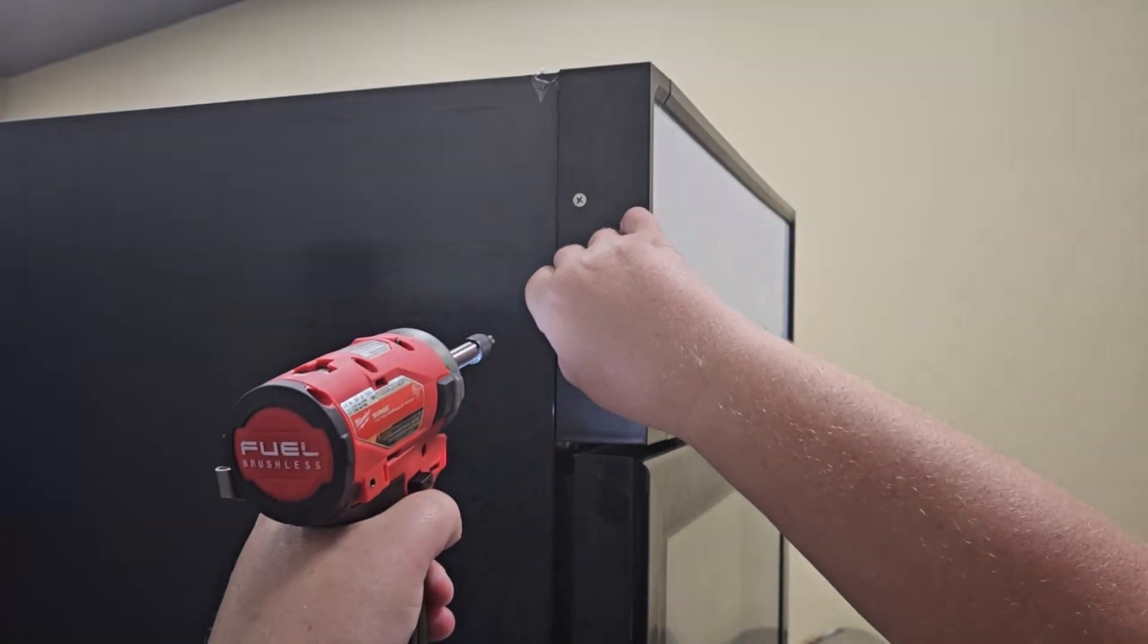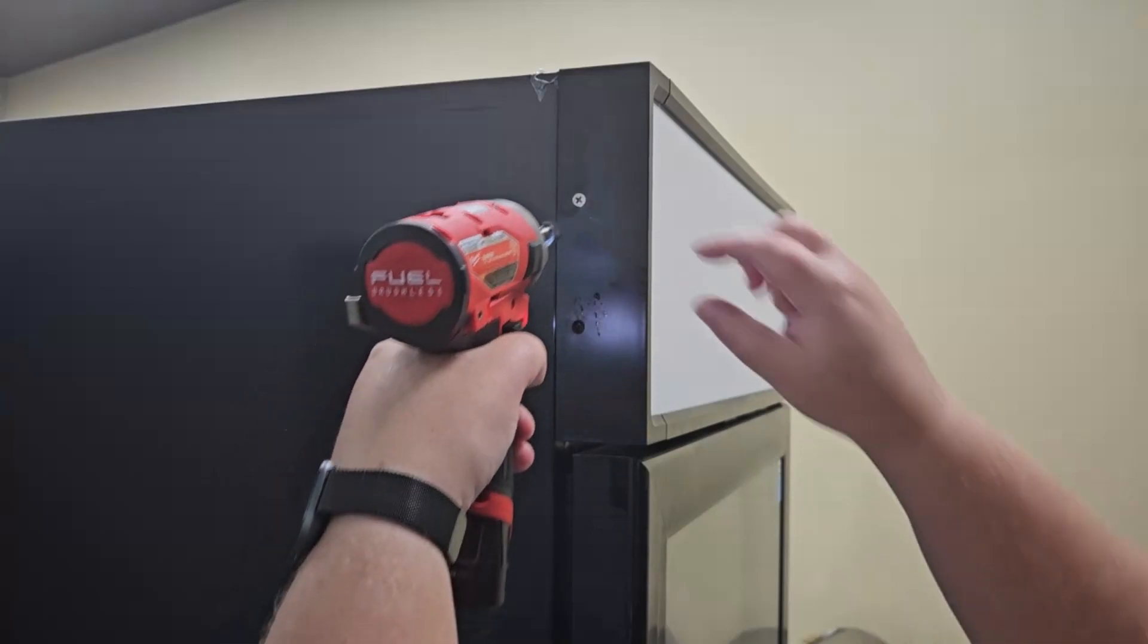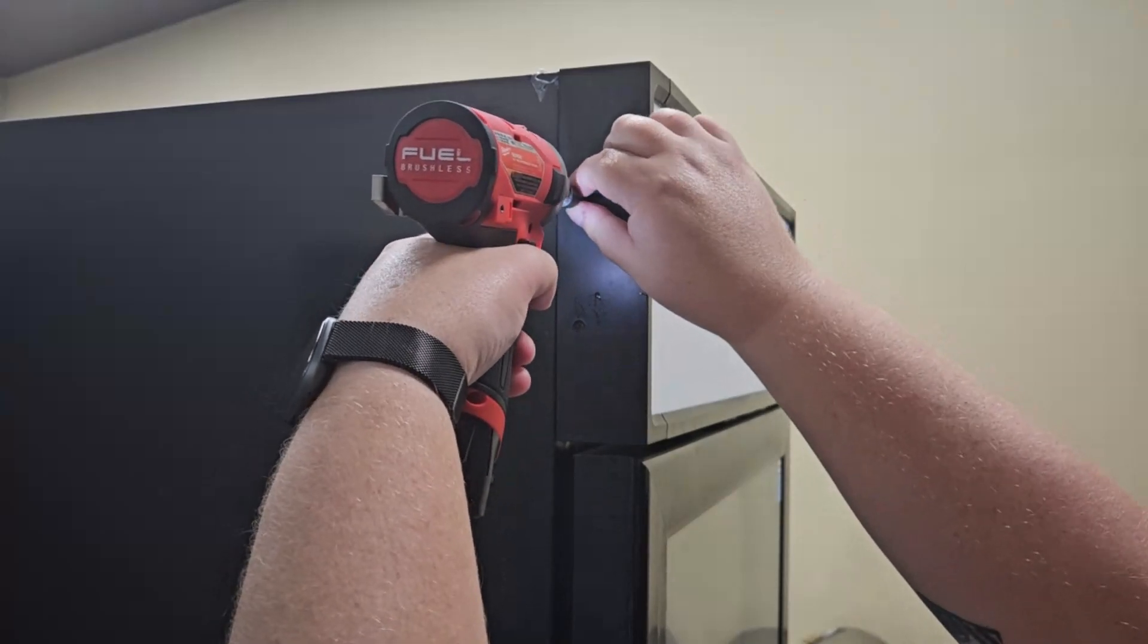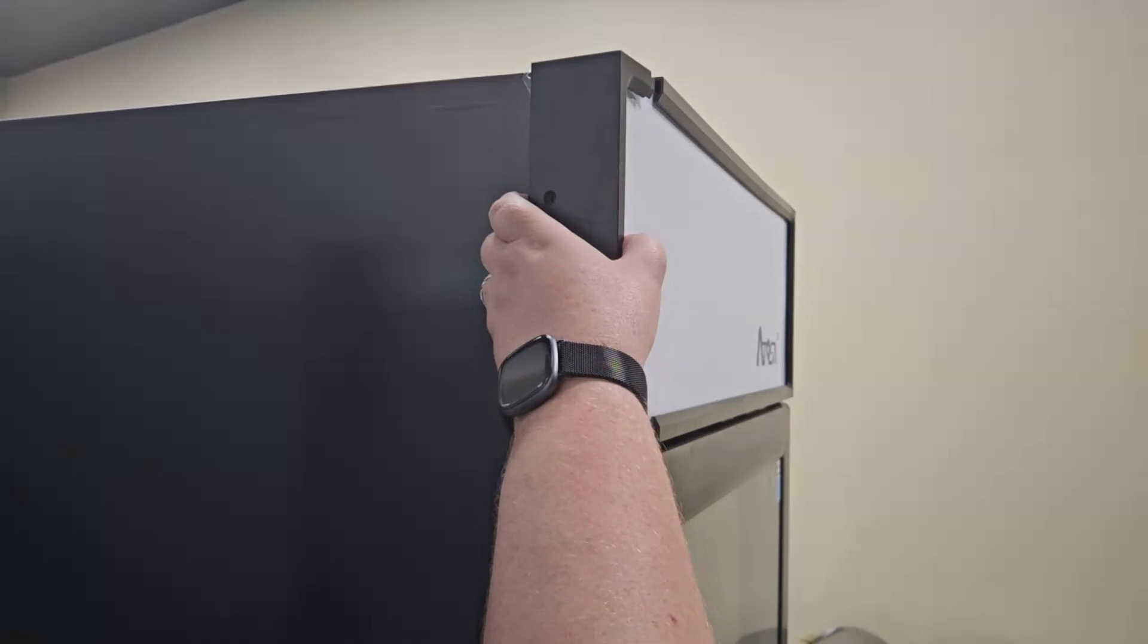On the merchandisers that have the raised banner frames as shown, simply remove the two end cap screws then gently pull the end cap off of the banner frame.